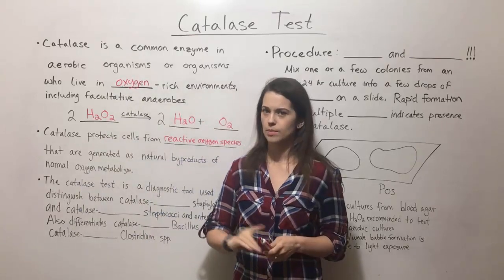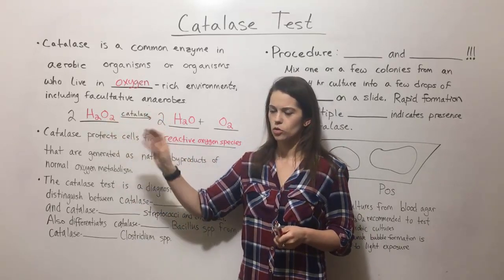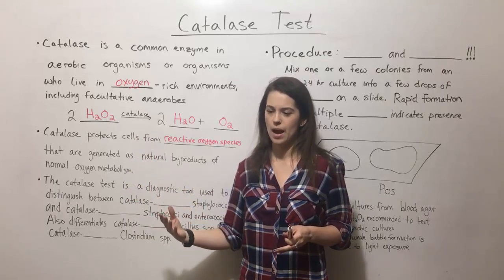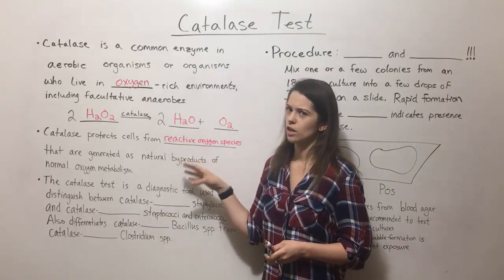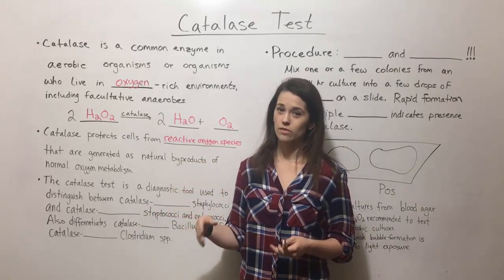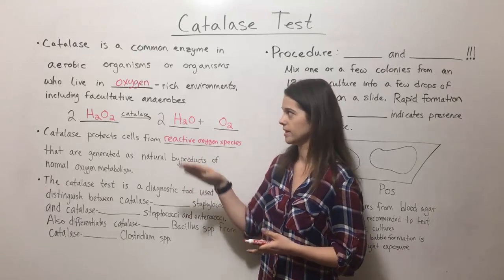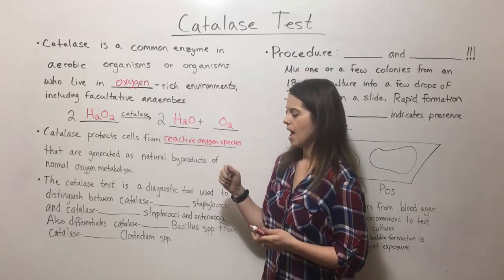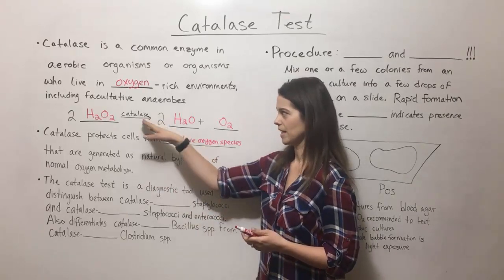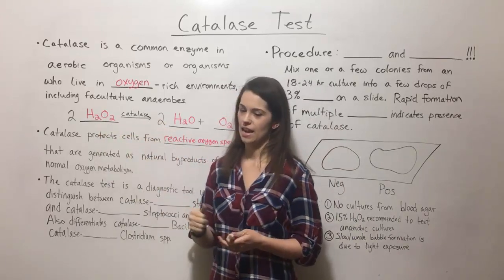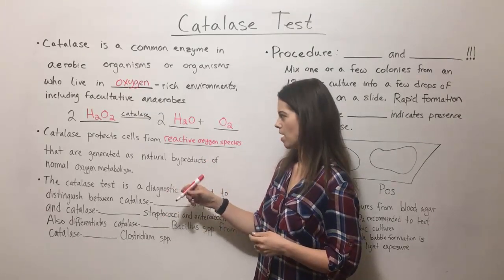Reactive oxygen species, sometimes abbreviated as ROS, refer to things like hydrogen peroxide, superoxide, anything that has an oxygen free radical like a hydroxyl free radical, because these can cause a lot of oxidative damage to cells. They can damage proteins and, even more importantly, they can damage DNA. So it's important that we reduce that damage in cells that live in oxygen-rich environments. All of these reactive oxygen species are natural byproducts of normal oxygen metabolism, and catalase is the enzyme that specifically takes care of the hydrogen peroxide portion of those byproducts.